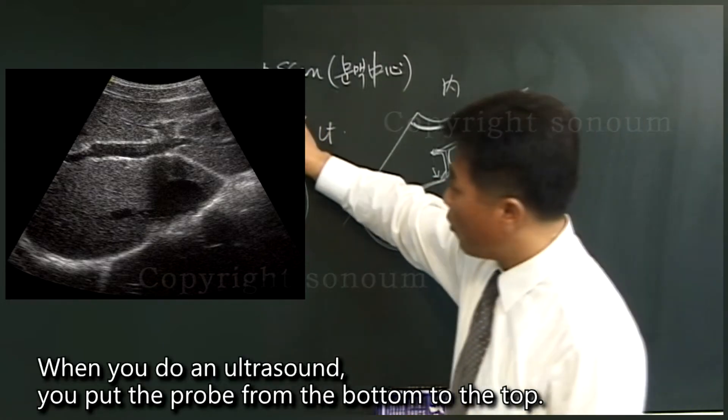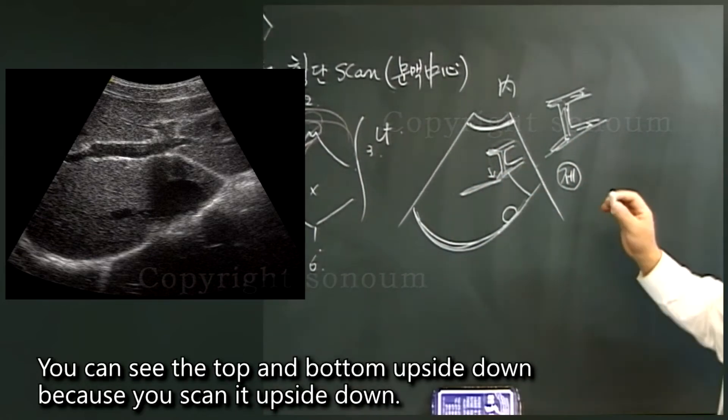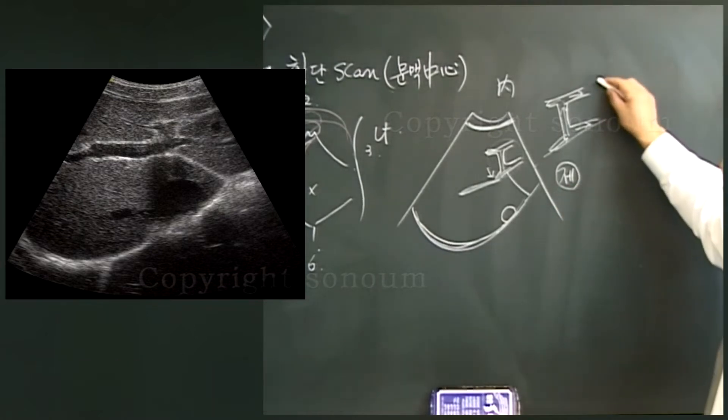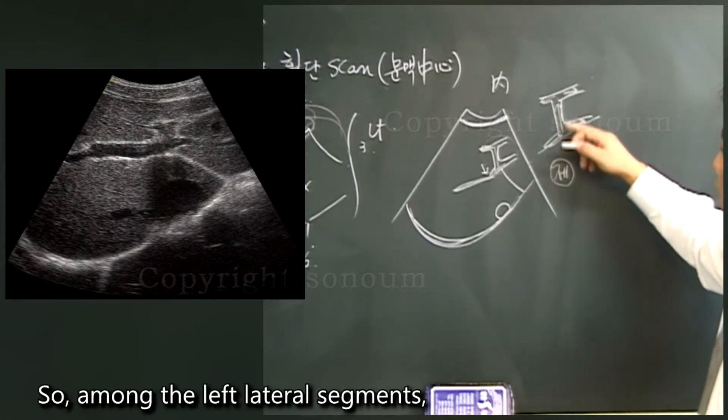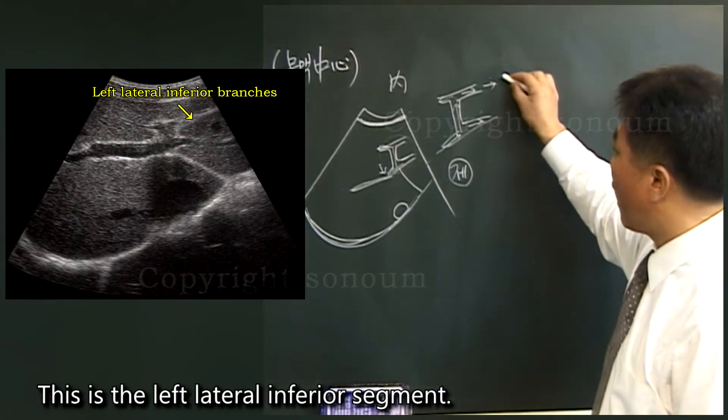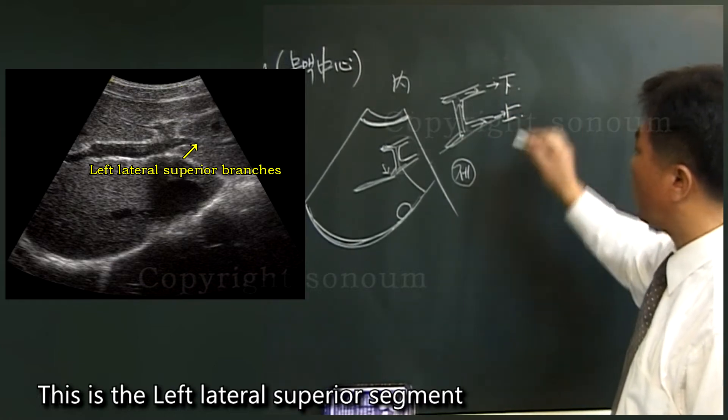When you do an ultrasound, you put the probe from the bottom to the top. You can see the top and bottom upside down because you scan it upside down. So, among the left lateral segments, this is the left lateral inferior segment. This is the left lateral superior segment.